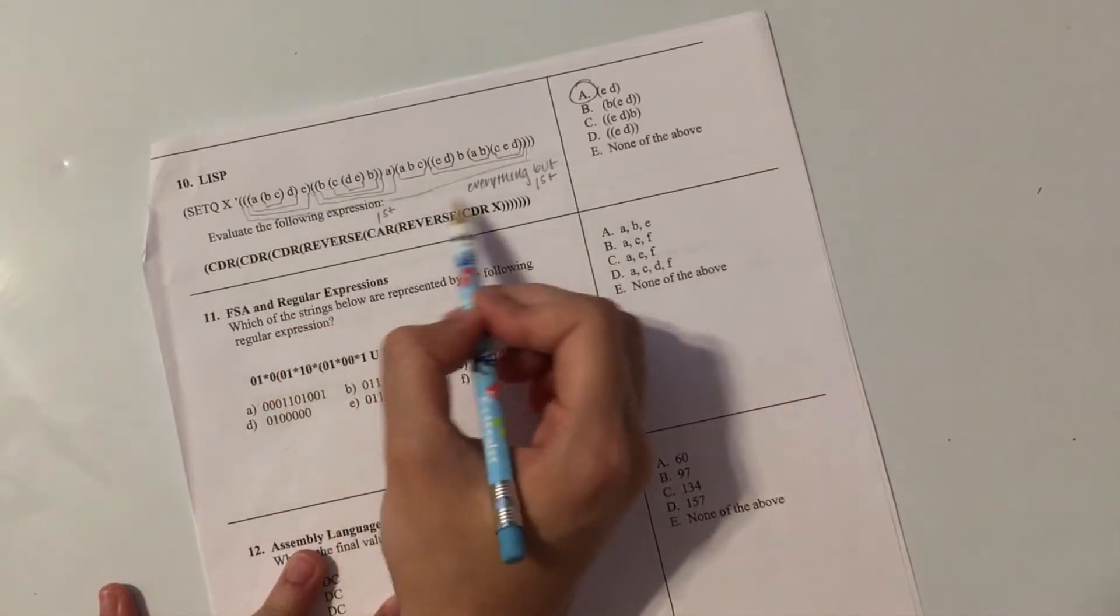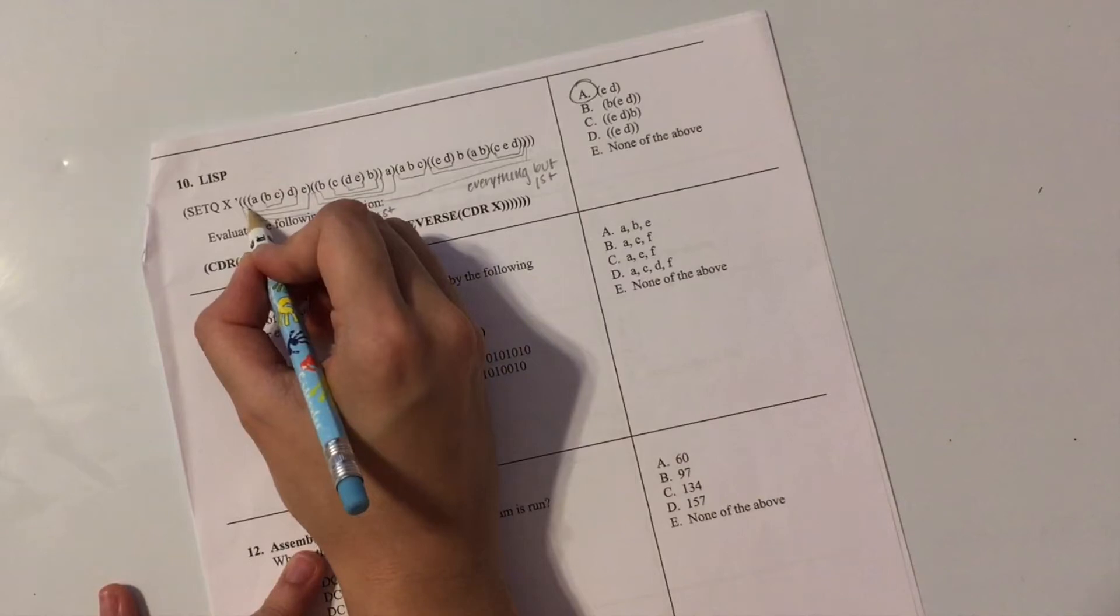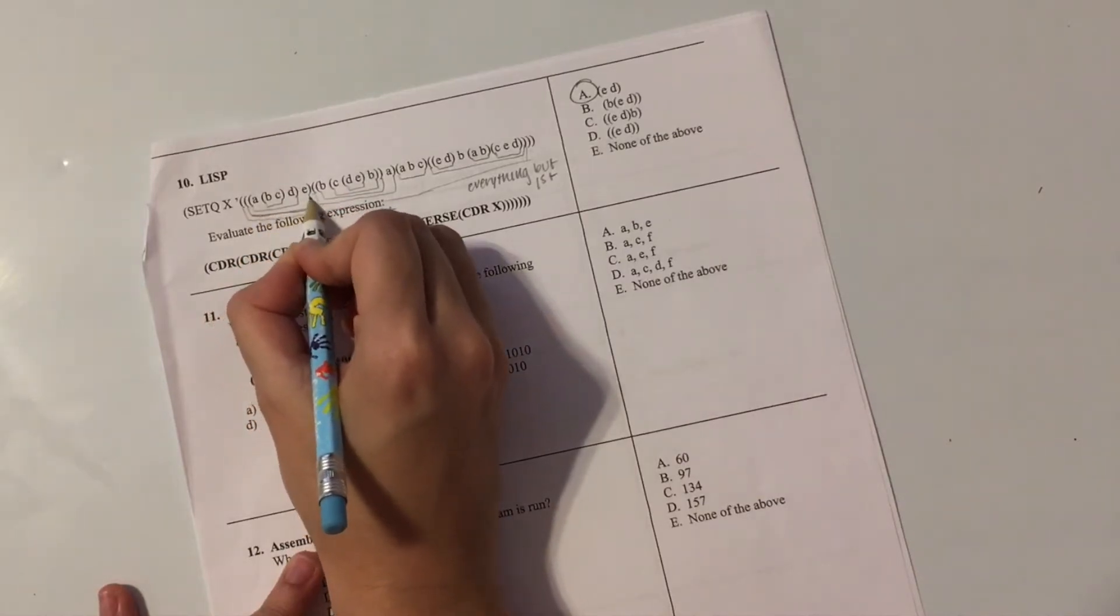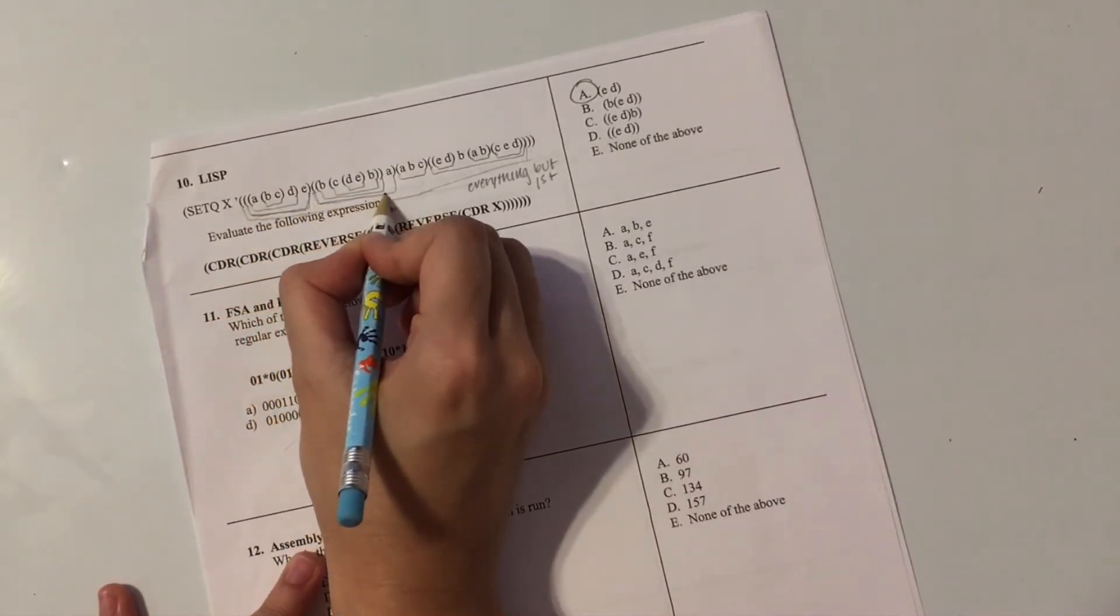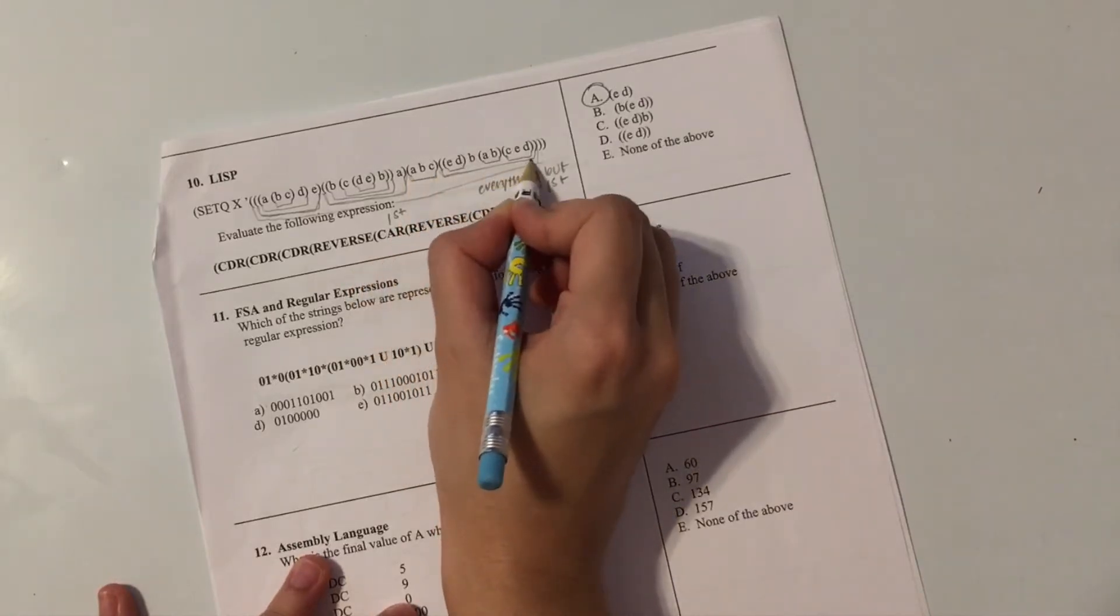So X is all of this. And it has four elements. It has this one, this one, this small one, and then finally this fourth one here.